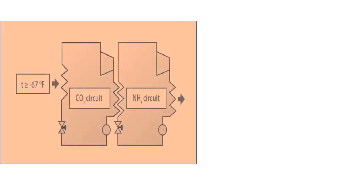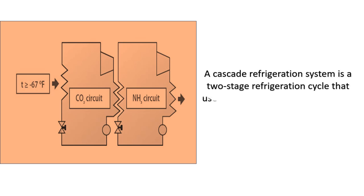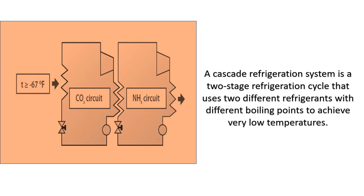Cascade refrigeration system. A cascade refrigeration system is a two-stage refrigeration cycle that uses two different refrigerants with different boiling points to achieve very low temperatures.